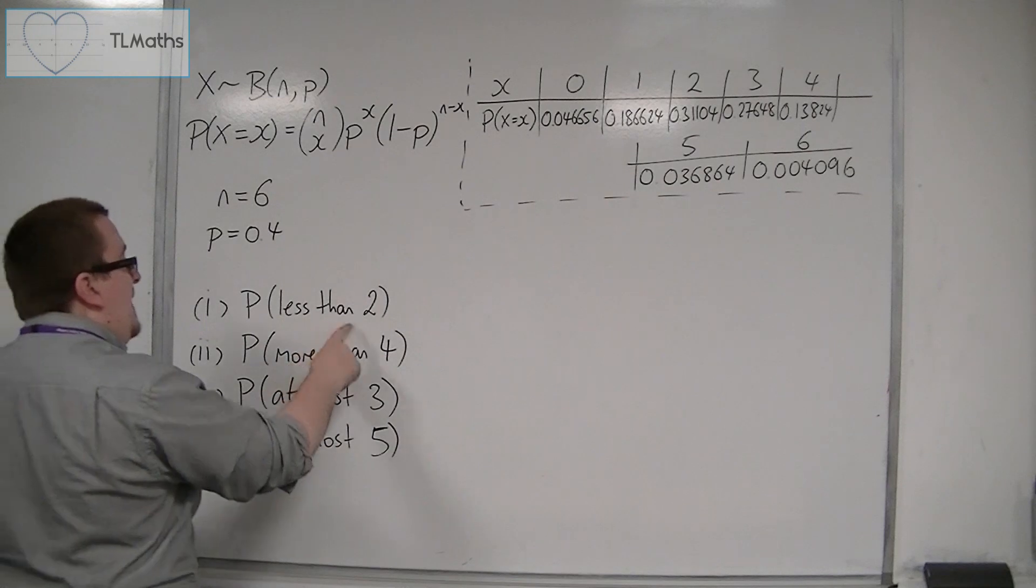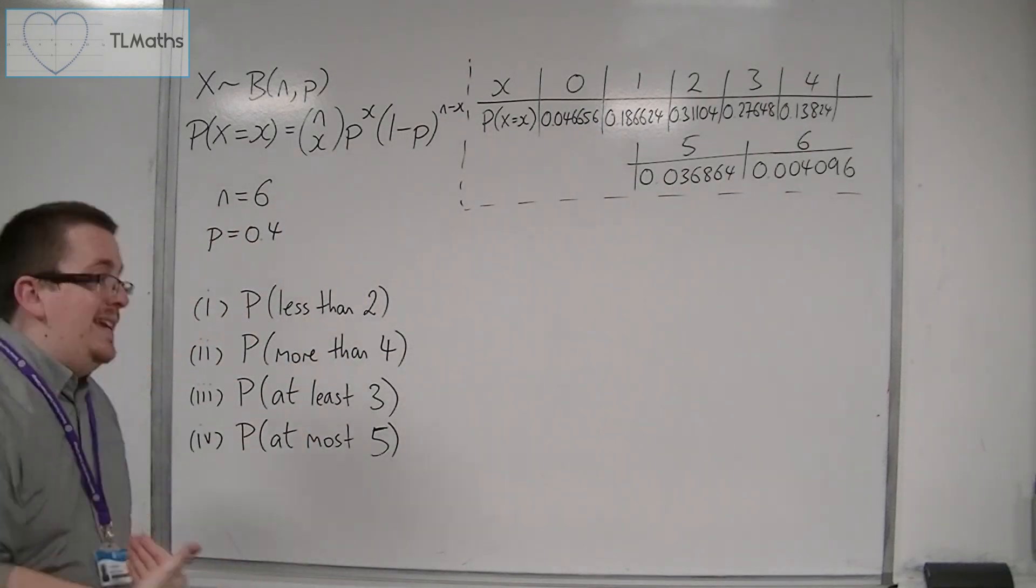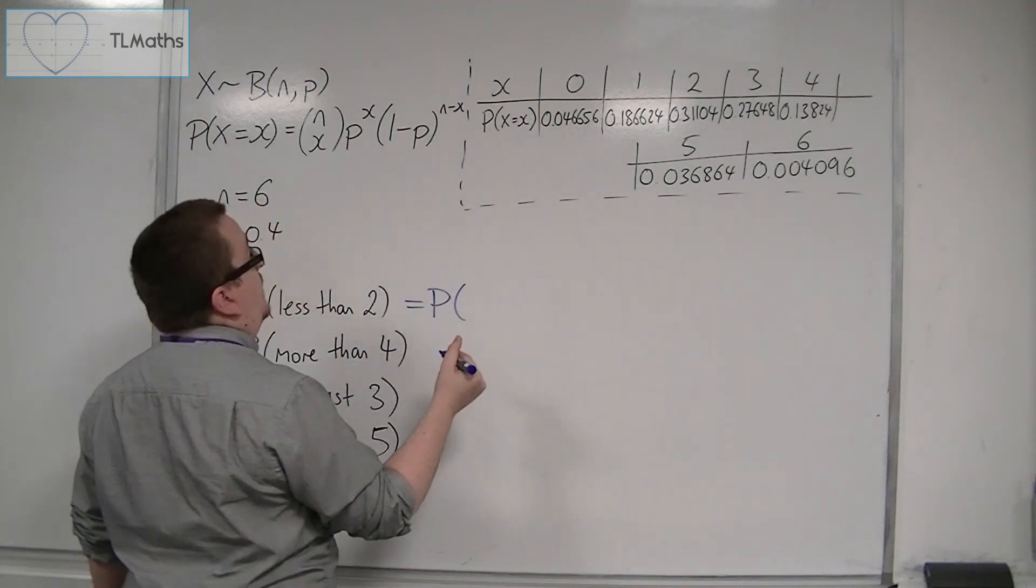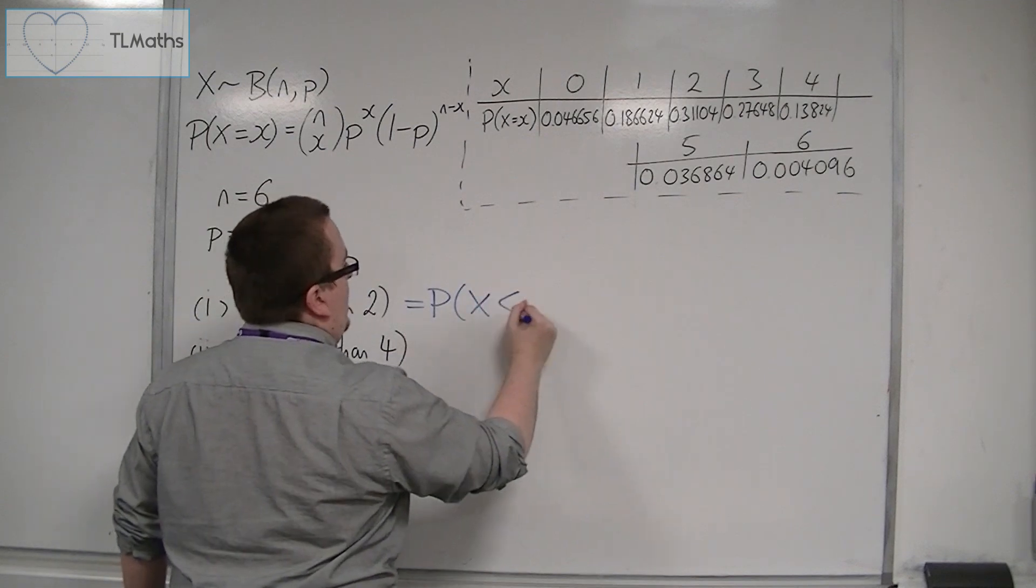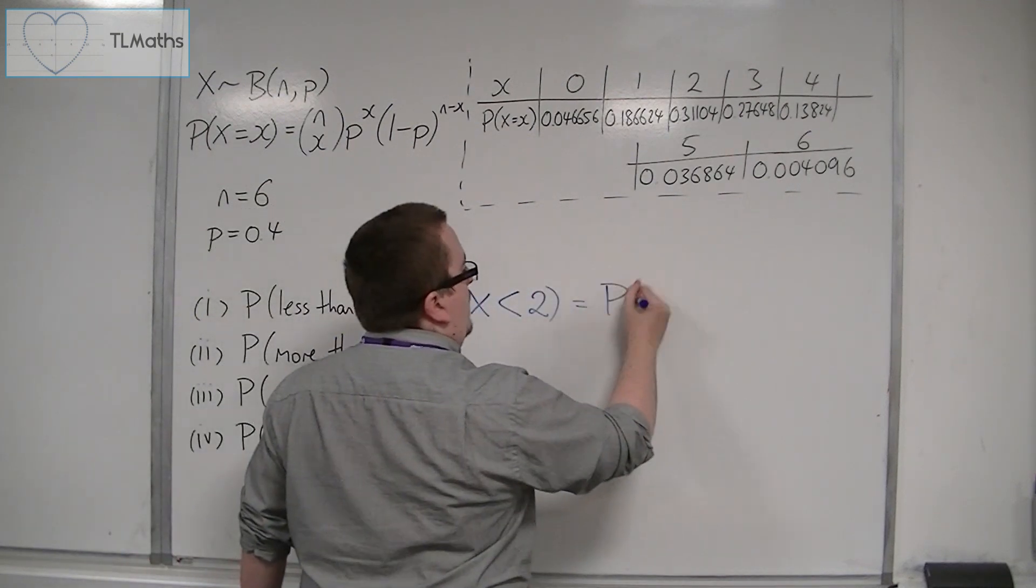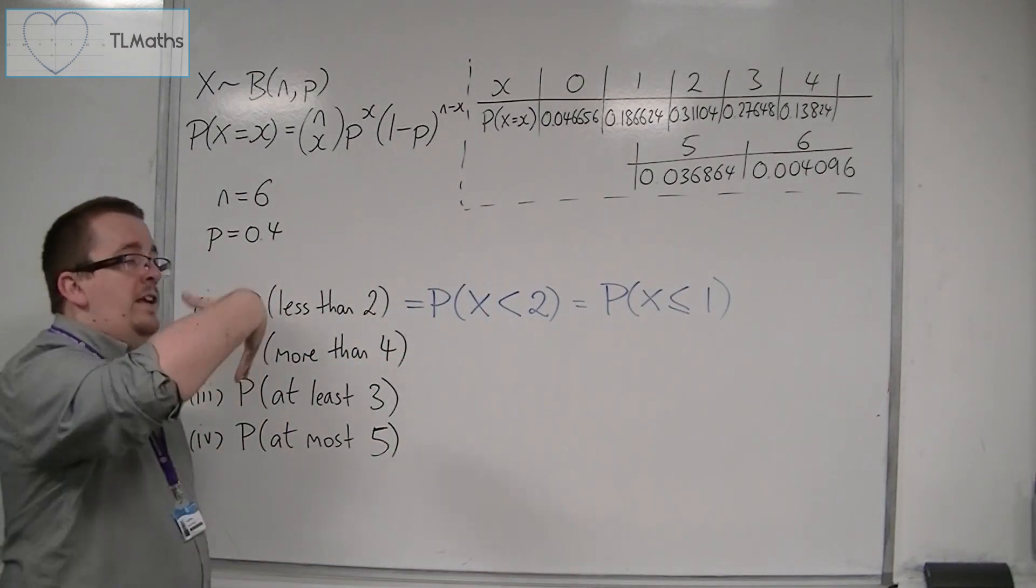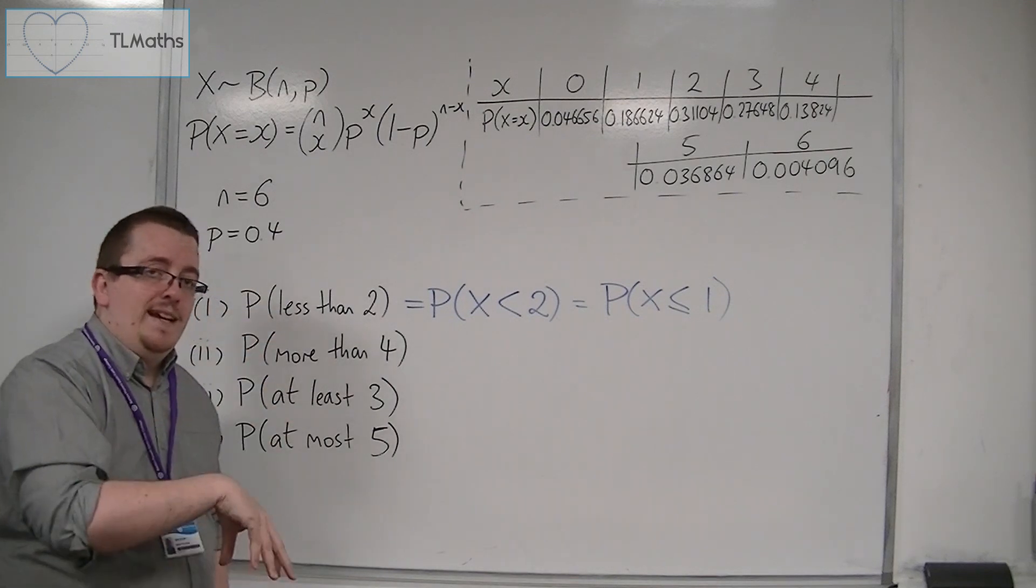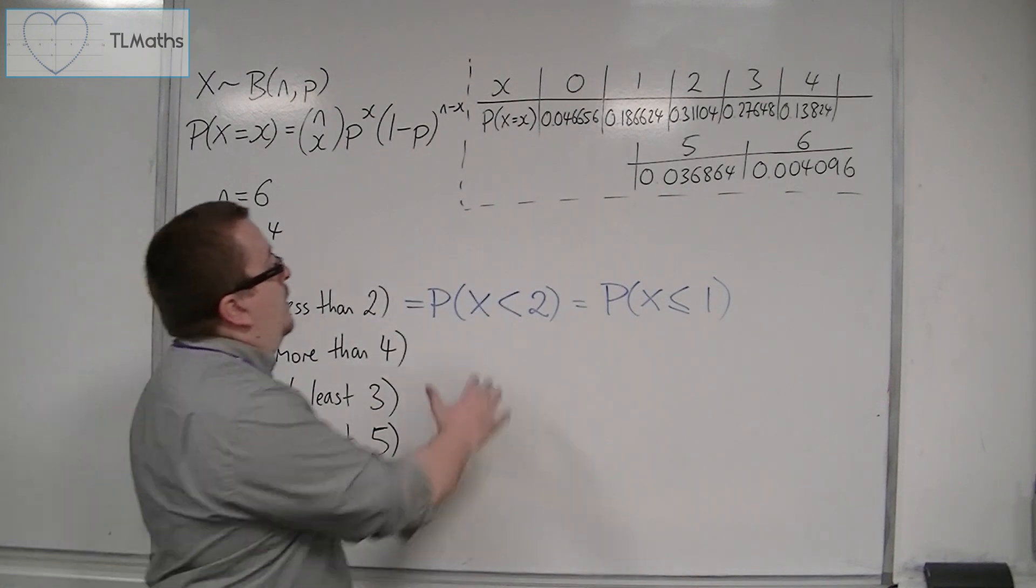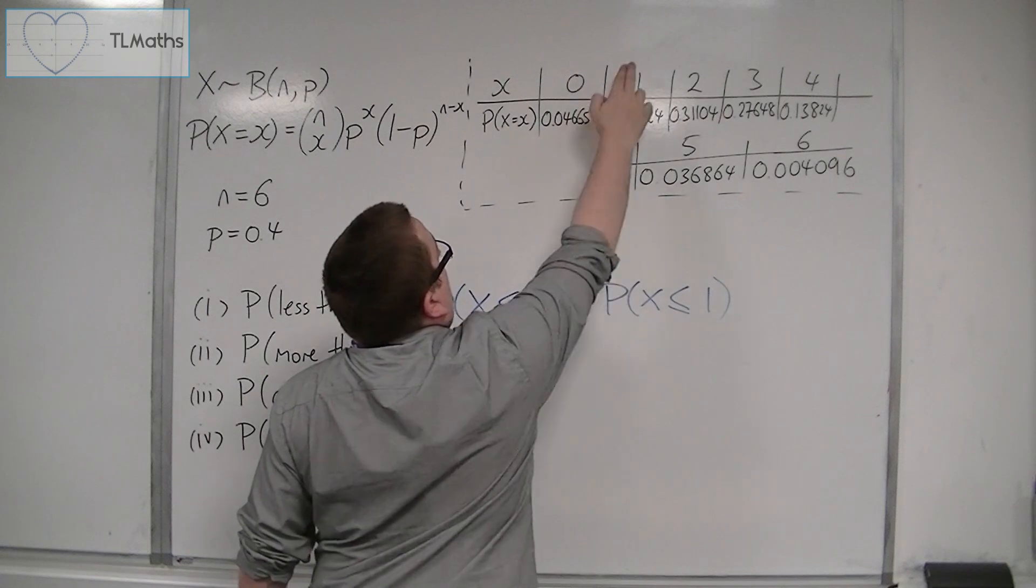So if I'm looking for the probability of less than 2, then I want to be strictly less than 2. So the probability of x being less than 2 is the same as the probability of x being less than or equal to 1. Because it's binomial, it's discrete data, you can't take on values of 1.5 or 1.7. So anything that's less than 2 can only either be 0 or 1.